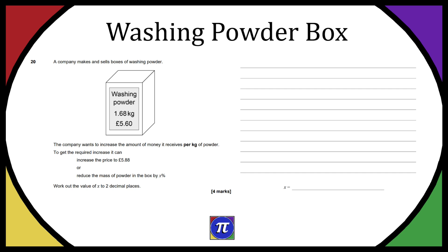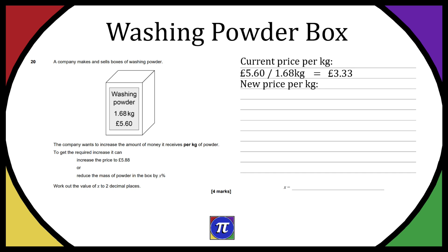The company effectively wants to change the amount of money it receives per kilogram of washing powder sold. The current price per kilo is £5.60 divided by 1.68 kg — price divided by weight — which gives £3.33 per kilogram.